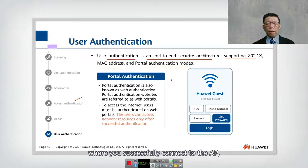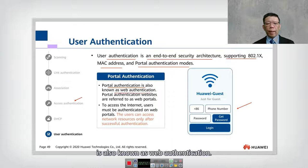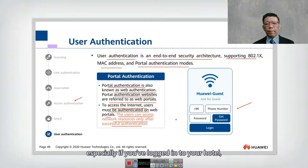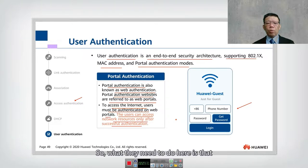Portal authentication works as follows: once you connect to the AP, you are asked to fill in credentials on a web page controlled by the AC or a security server. Portal authentication is also known as web authentication — users must authenticate on a web portal before accessing the internet. This is especially useful in hotels, where a pre-shared key would be insecure and 802.1X enrollment is complex. Instead, each guest receives a unique password, making user authentication very practical.